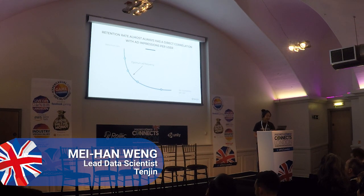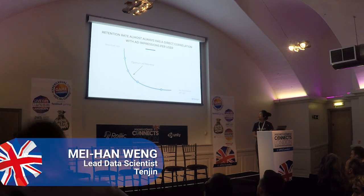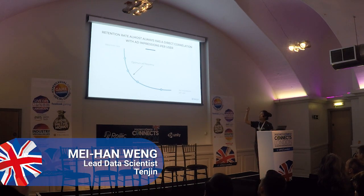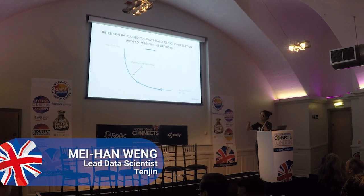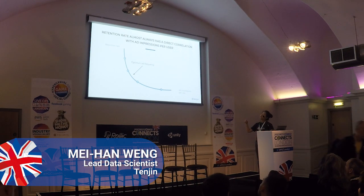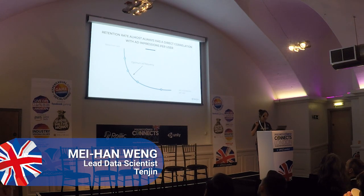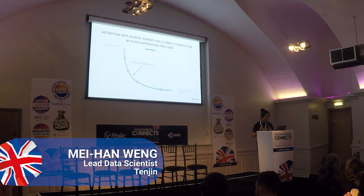When you annoy your users too much, your retention rate drops — no one wants to watch a million ads in ten minutes. We're trying to figure out the optimum point for ad frequency. We realized we can actually plot a 3D chart: with the Z-axis representing LTV value, when LTV reaches its highest point, that's your cutoff point for ad frequency. You can build this in any BI tool — Tableau, Periscope, or anything else.